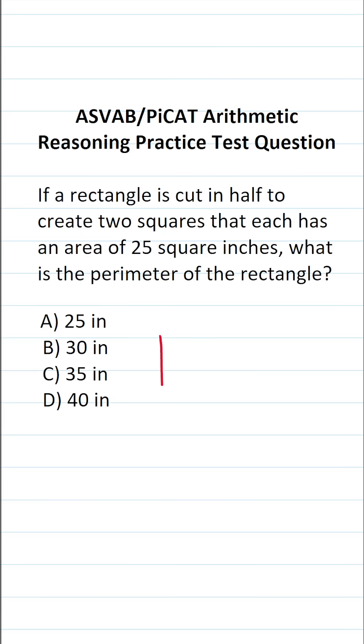Now, for this particular problem, I'm going to start by making a quick diagram. Again, according to the problem, we have a rectangle that's cut in half to create two equal squares. Each of these squares has an area of 25 square inches.